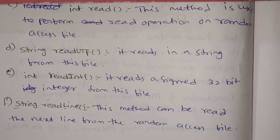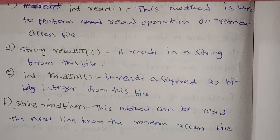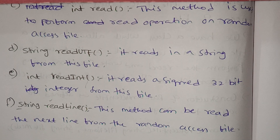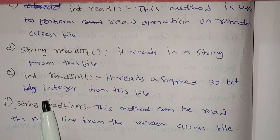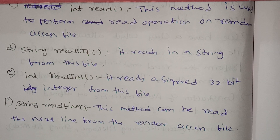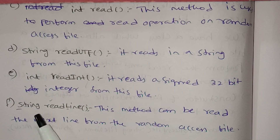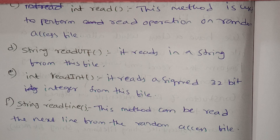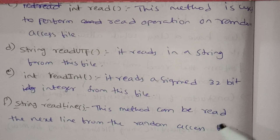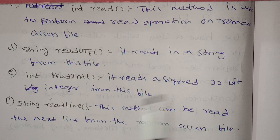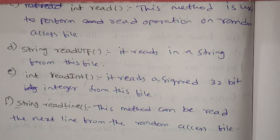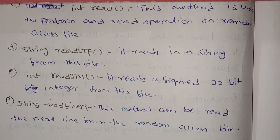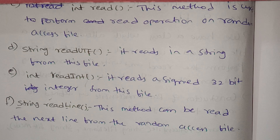The int read() method reads 1 byte which is 8 bits, and an integer is 4 bytes which is 32 bits. You can use readInt() to read an integer value from the file. The method readLine() reads the next line from the random access file — you can use it to get the next line.